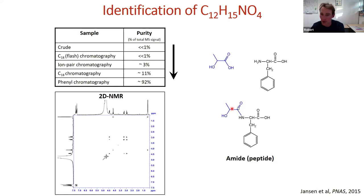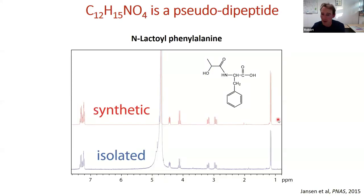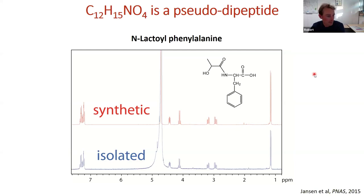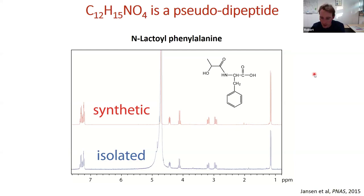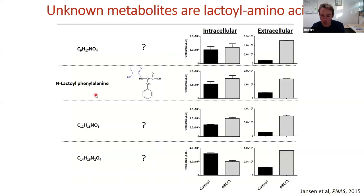2D NMR revealed two substructures: a lactate substructure and a phenylalanine substructure, likely linked via an amide bond. This makes it a pseudopeptide — not two amino acids but a carboxylic acid linked to an amino acid. The metabolite was completely new, so we synthesized it, and the NMR spectrum of the synthesized compound was identical to the isolated metabolite, confirming the cells make N-lactoyl phenylalanine.